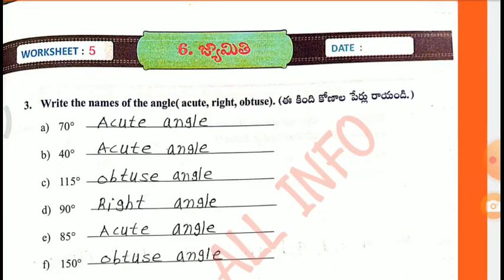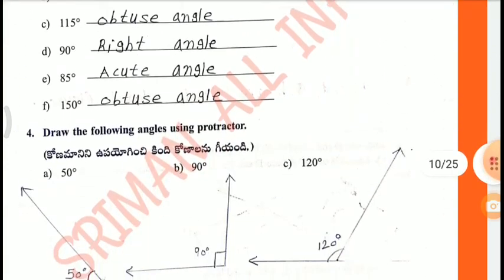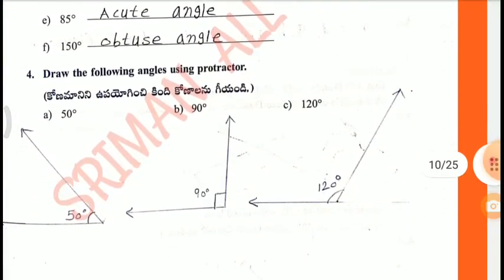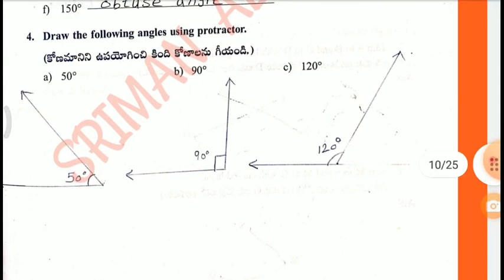Classify the following angles: A — 70 degrees, Acute Angle. B — 40 degrees, Acute Angle. C — 150 degrees, Obtuse Angle. D — 90 degrees, Right Angle. E — 85 degrees, Acute Angle. F — 150 degrees, Obtuse Angle.